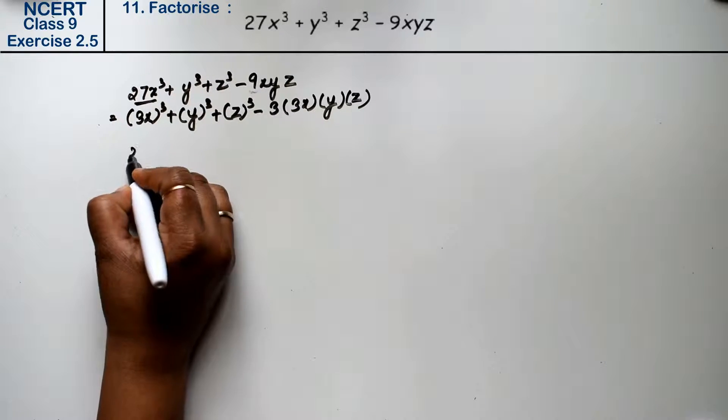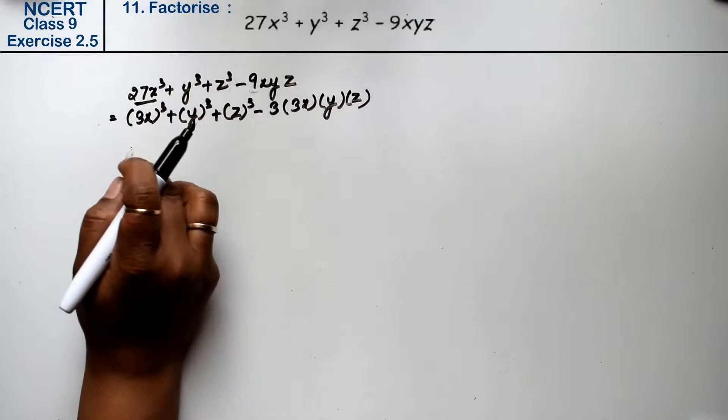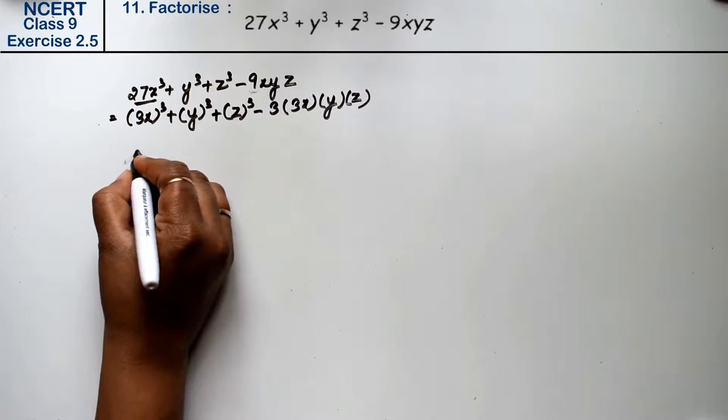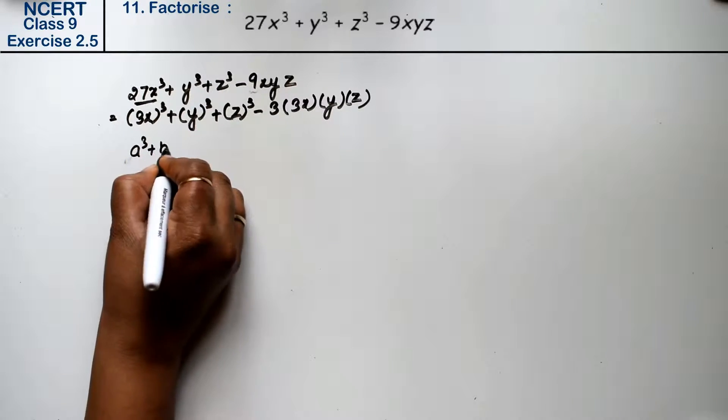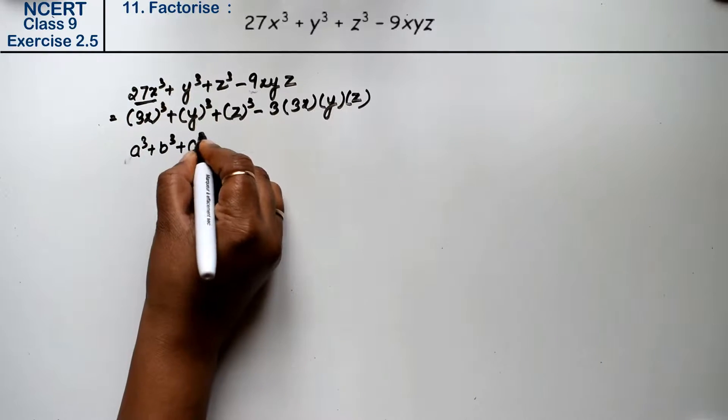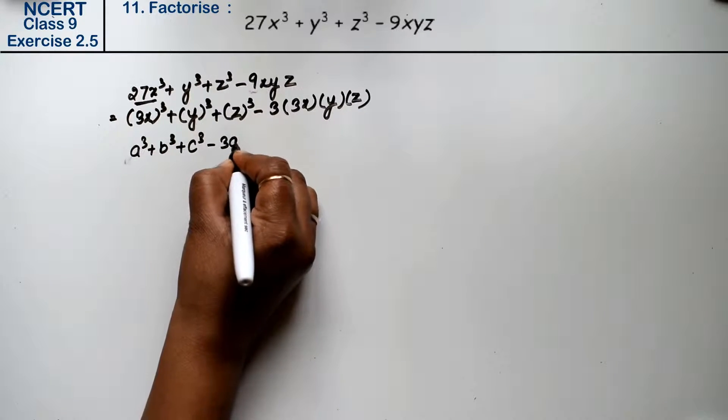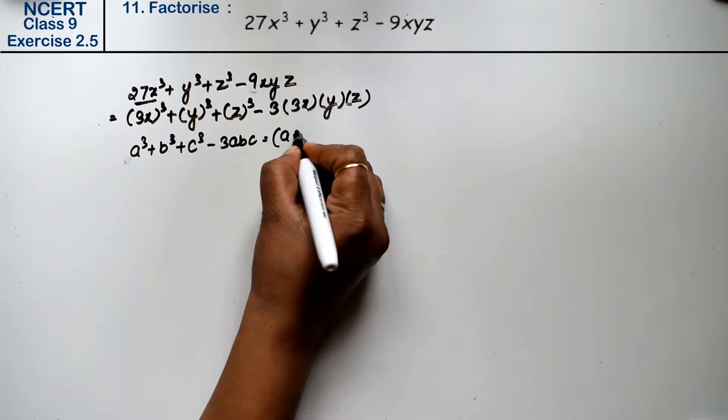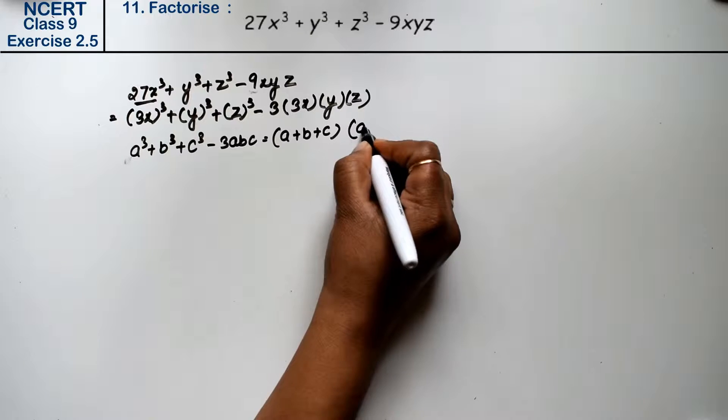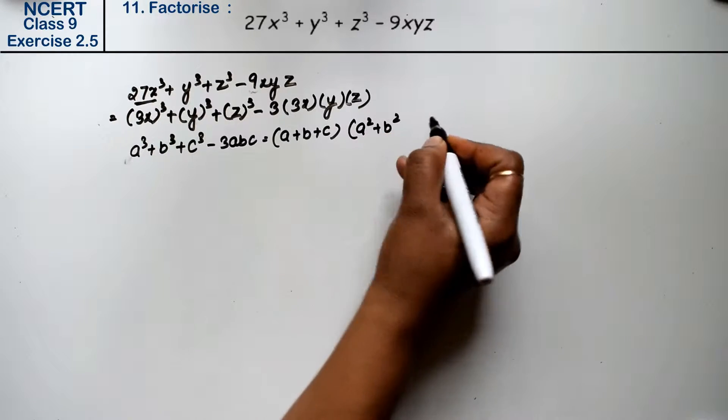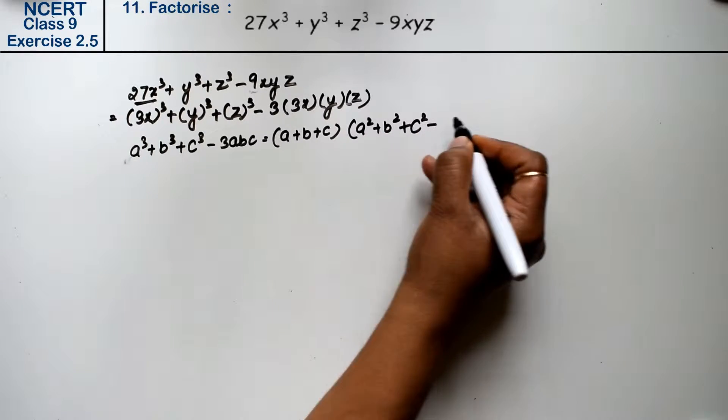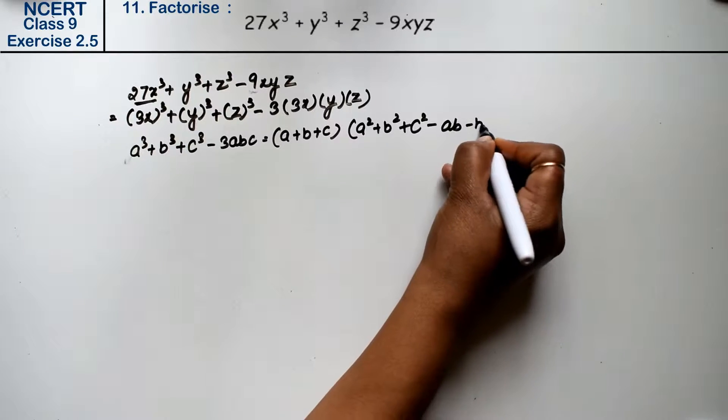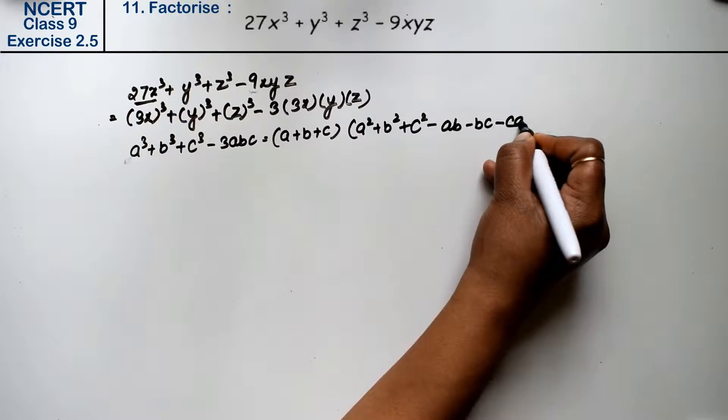So you can see whose formula this is. a³ + b³ + c³ - 3abc equals (a + b + c)(a² + b² + c² - ab - bc - ca). Right?